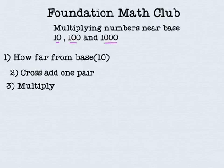Let me take the first example that is 12 times 14. The base in this case is 10 because these numbers are near 10. Now the first step says how far from base. So 10 plus 2 gives us 12 and 10 plus 4 gives us 14. We are done with step 1.